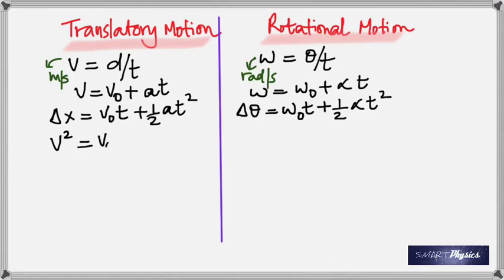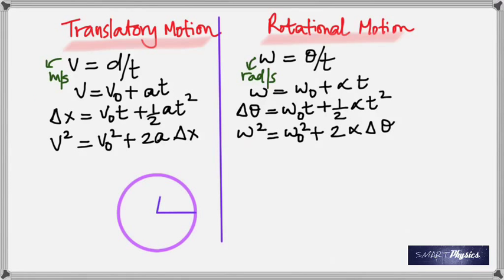Similarly, v² = v₀² + 2aΔx becomes omega² = omega₀² + 2·alpha·Δθ. There's also the equation Δx = (v₀ + v)/2 · t, which becomes Δθ = (omega₀ + omega)/2 · Δt. These are the main kinematic equations for rotational motion.